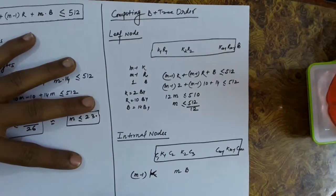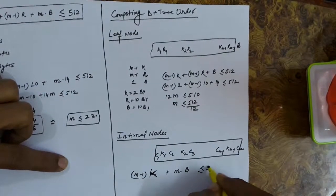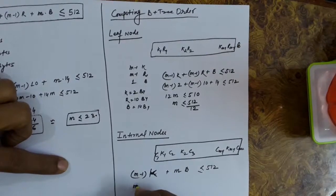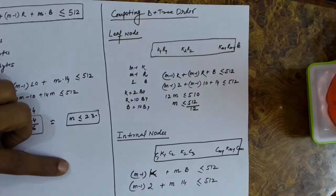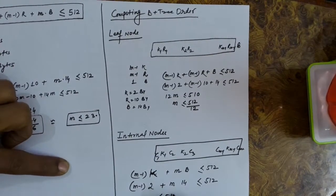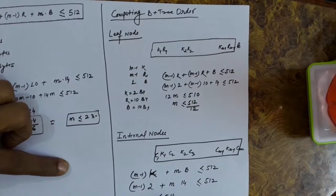Every child node is stored in a disk block, and this should be less than or equal to 512 bytes. Taking the same example where a key value is 2 bytes and block addresses are 14 bytes: (m-1)×2 + m×14 ≤ 512, which gives 16m ≤ 514, so m ≤ 514/16.